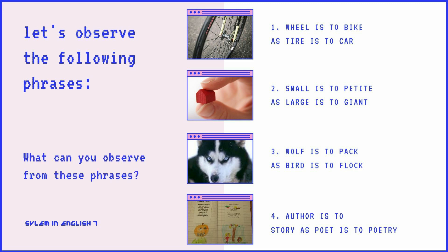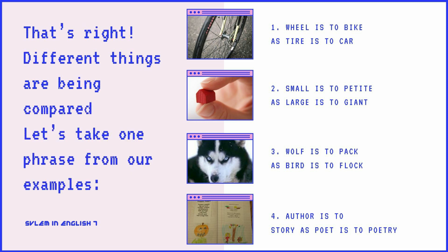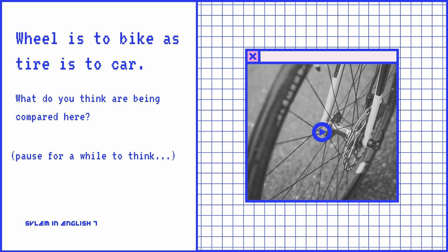What can you observe from these phrases? That's right! Different things are being compared. Let's take one phrase from our example: Wheel is to bike, as tire is to car.